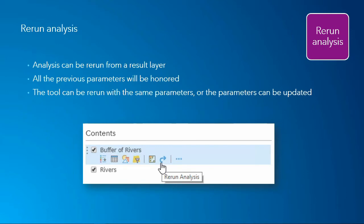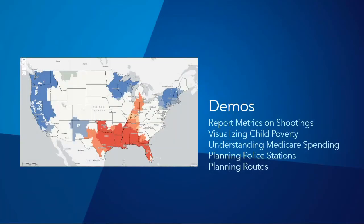If you haven't answered your analysis question, this is where you rerun that analysis. We've added improvements to make this easier: on result layers, you'll see a little icon with a blue arrow for rerunning analysis. This opens the same tool with all previous parameters already populated. Maybe you're rerunning with a change in parameter to explore how results differ, or you may need to rerun the exact same analysis because the underlying data has changed — for example, a feature service being updated in the field with new data or changing attributes.